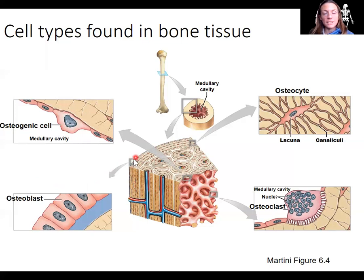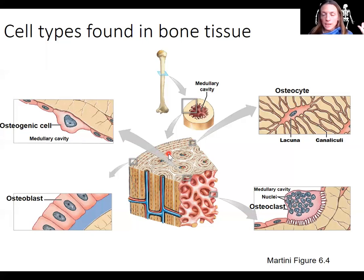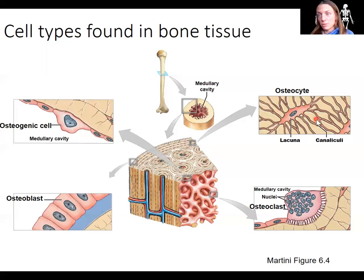Osteoblasts are located right inside the periosteum that surrounds the bone. Those osteoblasts develop into osteocytes — mature bone cells that get trapped in the lacuna after the osteoblasts have produced all their collagen. Calcium comes in and traps these osteocytes, which leave lacunae — these spaces around them — so they can have some space to live. The canaliculi connect adjacent osteocytes to each other so they can still obtain nutrients, because they are otherwise trapped in the matrix.